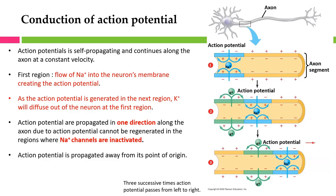Conduction of action potentials is self-propagating, meaning once triggered at the axon hillock, it generates itself and continues along the axon at a constant velocity. A diagram shows three successive time points as the action potential passes from left to right. At the site where the action potential is generated — the axon hillock — the flow of sodium into the neuron creates an action potential in that region, which undergoes depolarization. The sodium inside then spreads laterally and depolarizes the neighboring region, causing the next region to undergo an action potential.